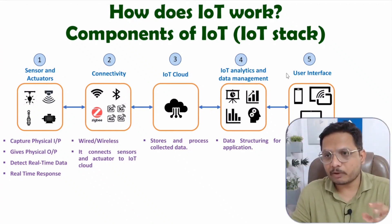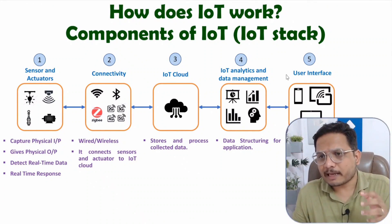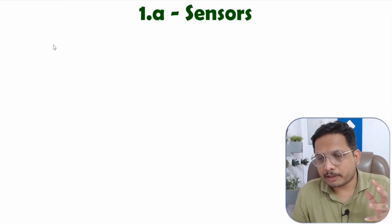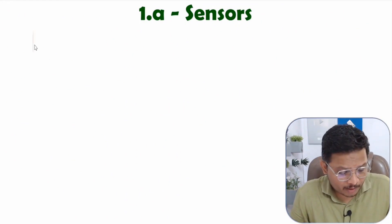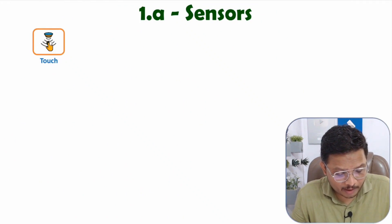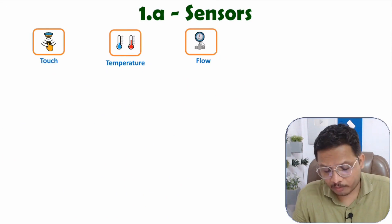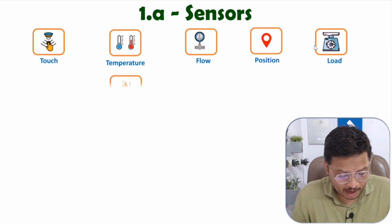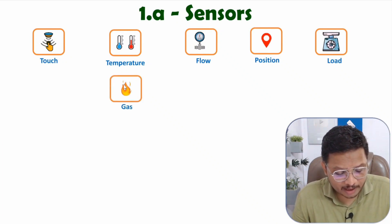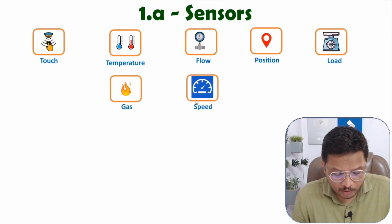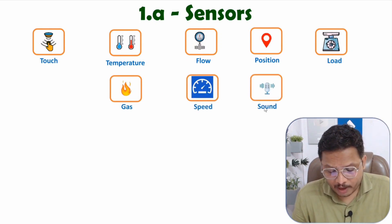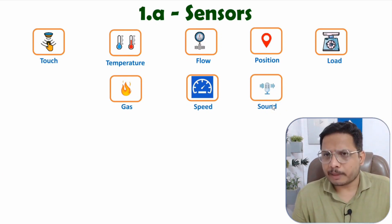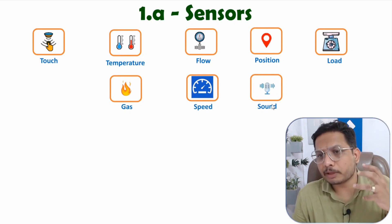Now let's look at sensors and actuators in detail. To help you understand sensors, here are some examples: a touch sensor to identify touch, a temperature sensor for temperature measurement, a flow sensor for fluid or gas flow, a position sensor to identify location, a load sensor for weight measurement, a gas sensor for gas leakage detection, a speed sensor to identify speed, and a sound sensor to identify sound. In this way, we have different types of sensors to measure physical quantities.